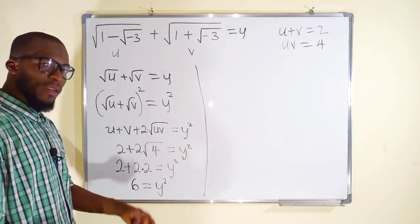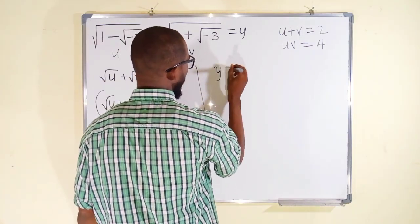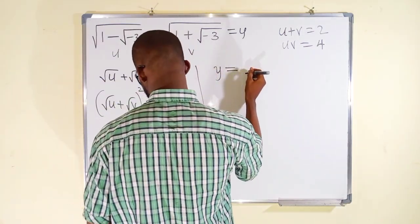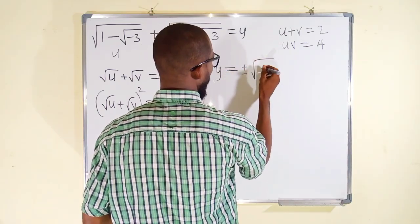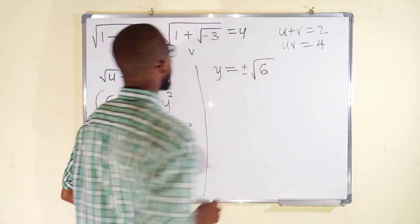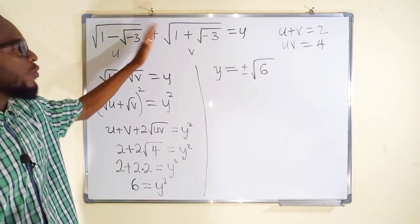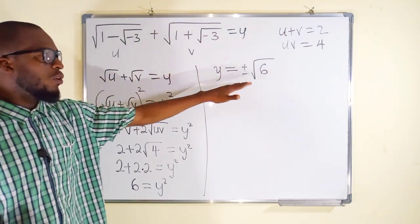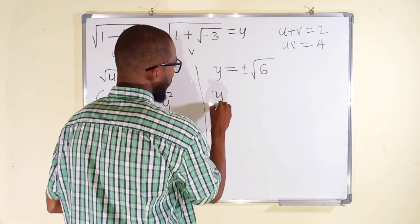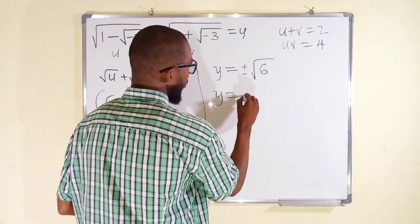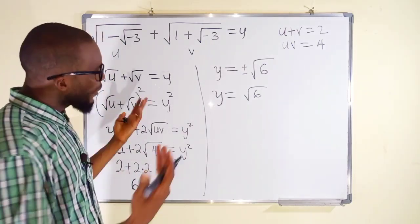We are looking for y, so now we can take the square root of both sides. We have y = ±√6. But remember, left hand side are all positive roots, so we are going to consider positive solution. And finally, you can see that y is equal to √6, which is a real solution.